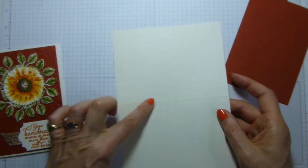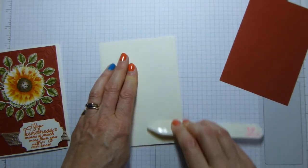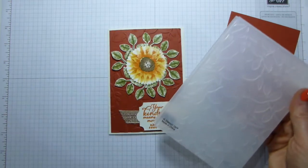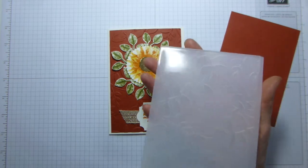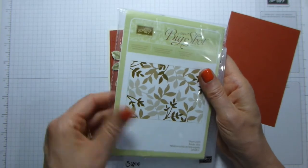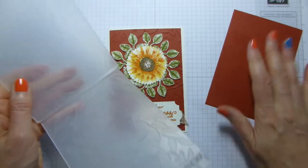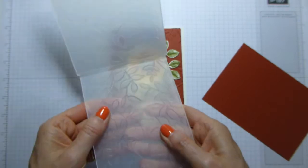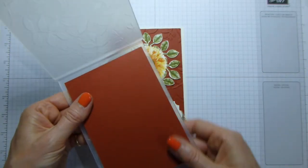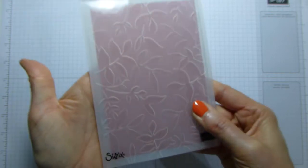So to get the base, having scored it, this is the lump side. So we're going to fold towards that and then reinforce with our bone folder. And then for the mat, I'm going to use this lovely new dynamic 3D textured impression folder. This is layered leaves, so perfect for this project. Because this is one of the textured impressions folders, which is very thick and very stiff, if you want it embossed, you need to put your cardstock into the folder so that the Stamping Up and Sizzix logos are facing you. And then that will push up, the other way will push down.